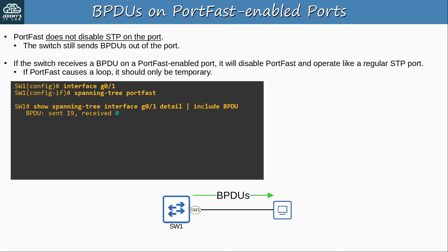Question 1: Which feature or features should be enabled to make a port immediately move to the forwarding state but become a regular STP port when it receives a BPDU? The answer is A — PortFast alone. PortFast makes the port immediately move to the forwarding state. If you enable BPDU Guard too, it will not operate normally when it receives a BPDU — it will error-disable the port. C is incorrect because the question doesn't mention stopping the port from sending BPDUs, and if BPDU Filter is configured in interface config mode, the port won't become a regular STP port when it receives a BPDU — it will simply ignore it.